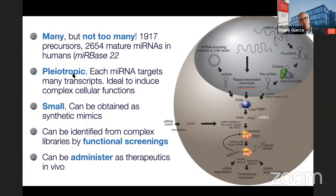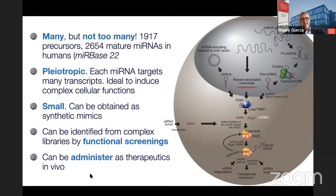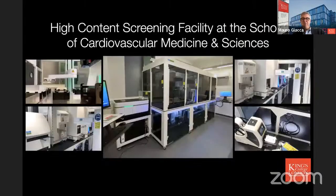Each microRNA is pleiotropic, targeting tens or hundreds of different genes. This means they have been evolved by nature to perform complex functions and change complex phenotypes — in concert, rather than inhibiting a single gene, a single lncRNA, or a single messenger RNA. And being small, they can be directly administered as therapeutics.